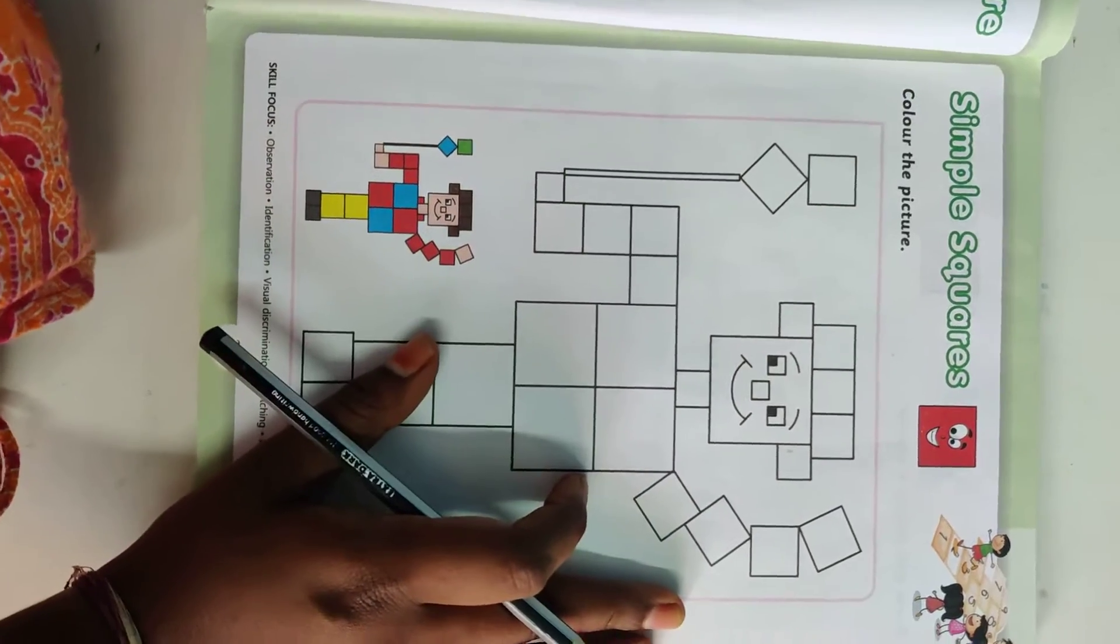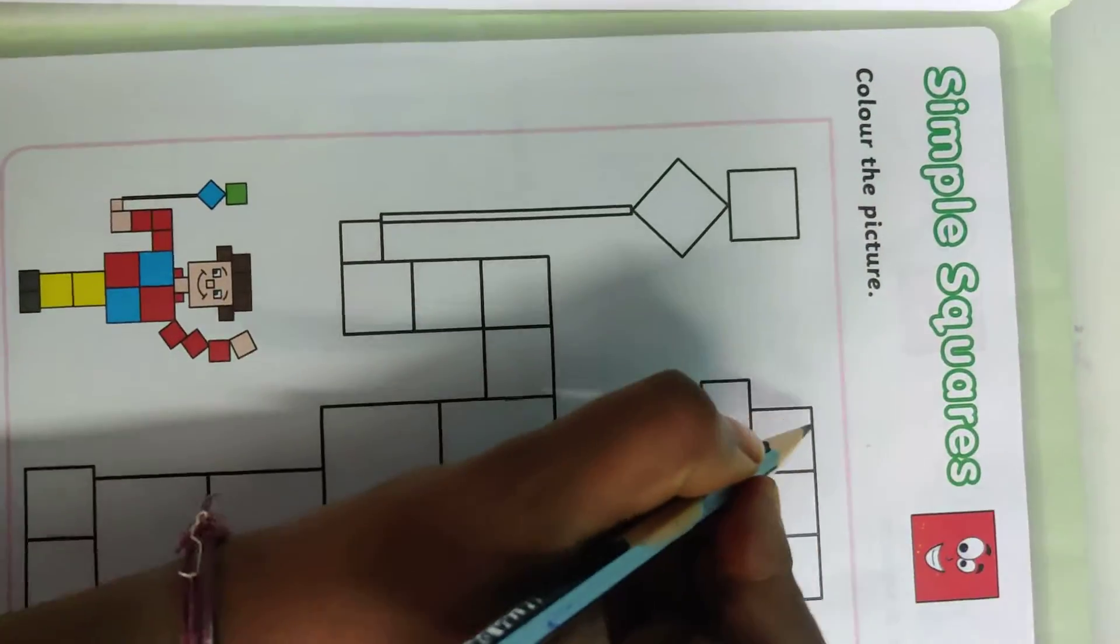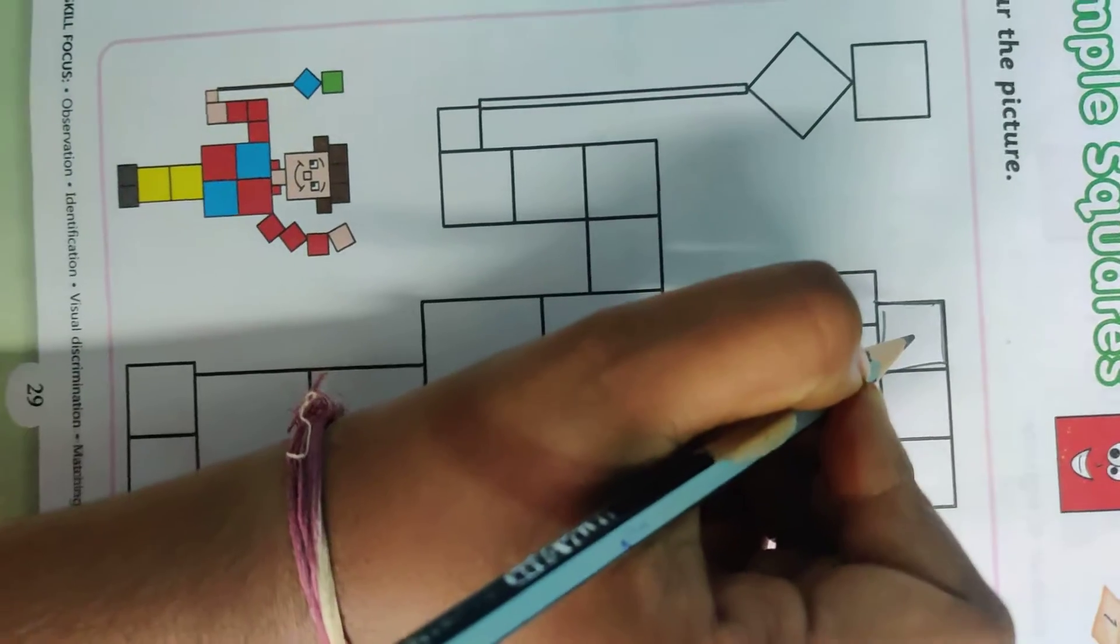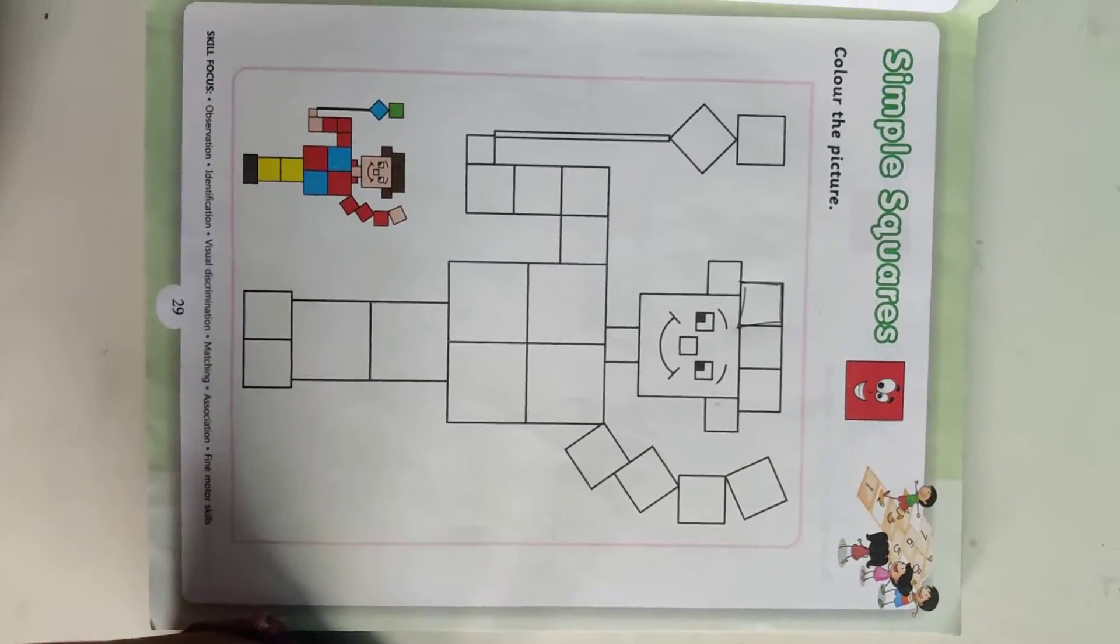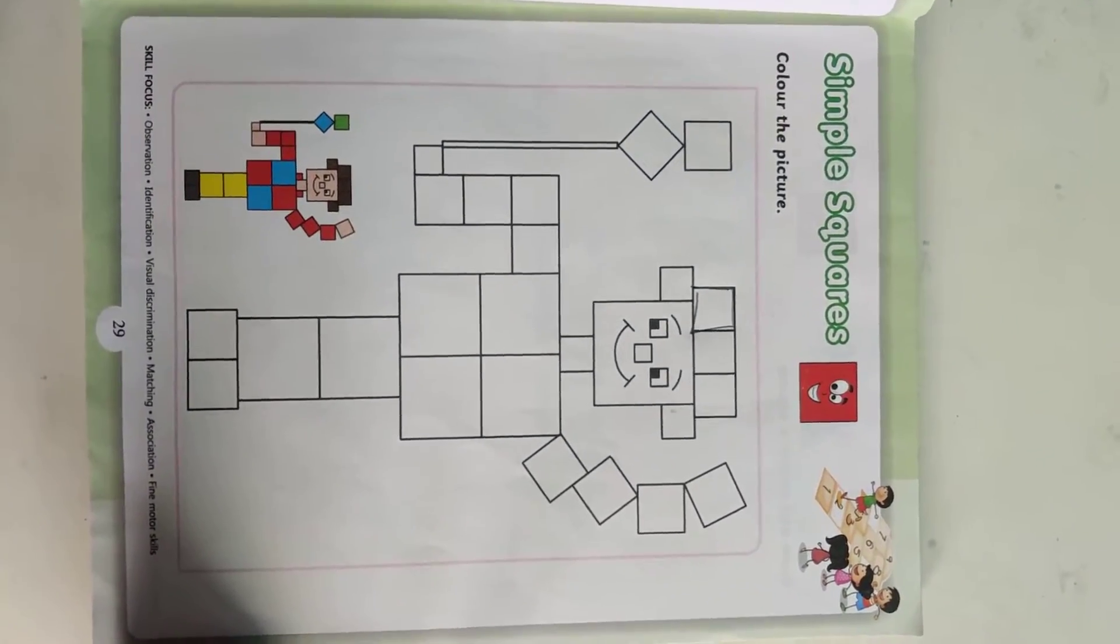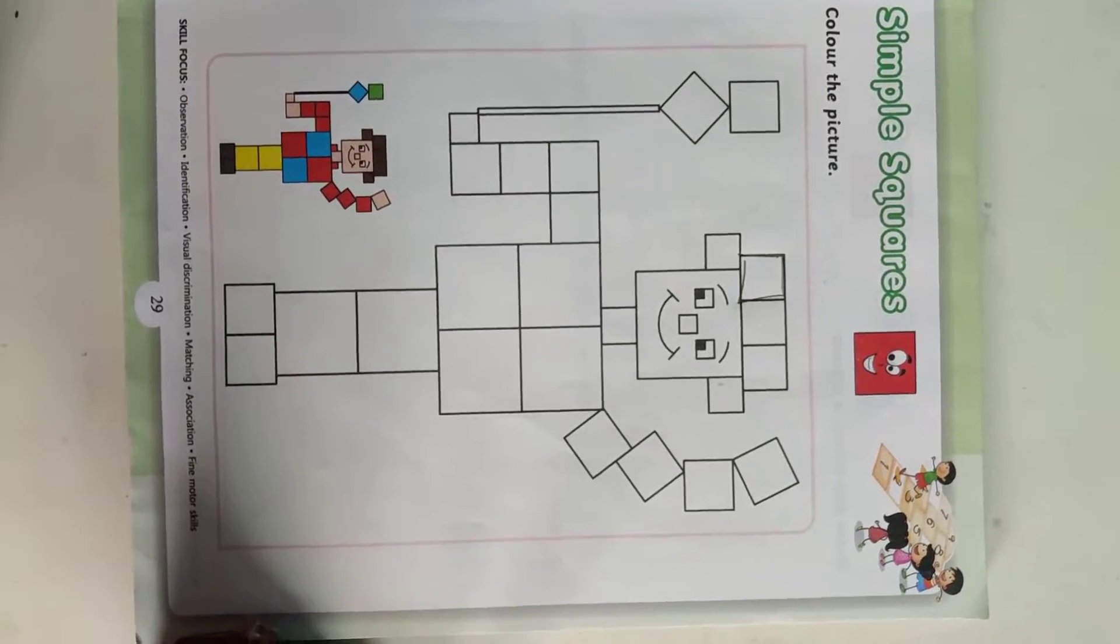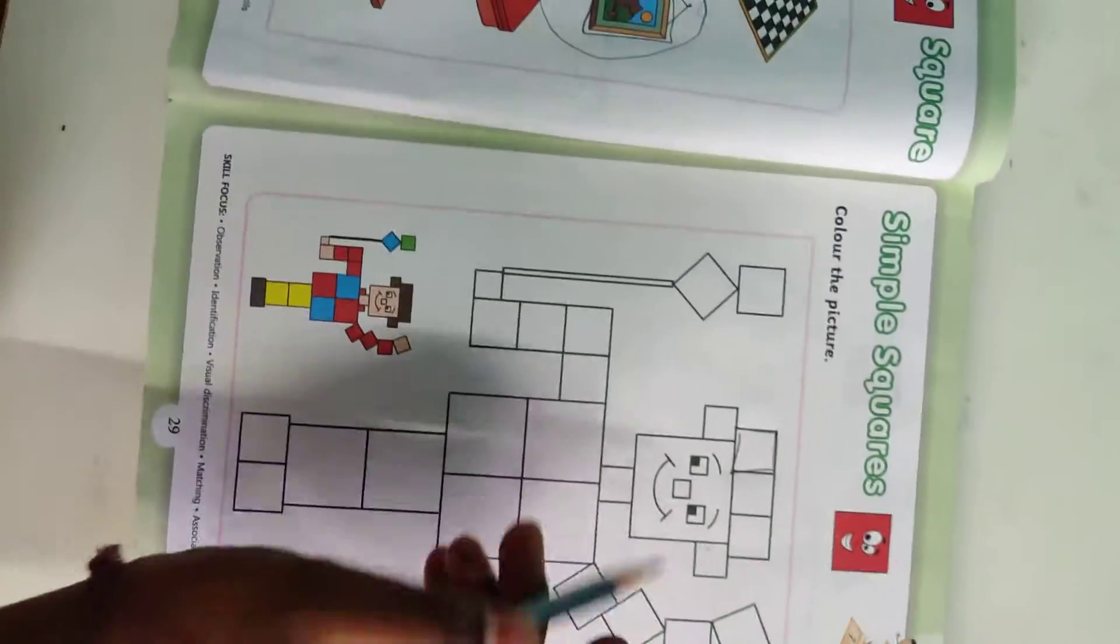And now, we are going to color the squares. See? Square. See? There are different squares here. Yengge equala square, square arukko, you have to color the this man. Square, square.